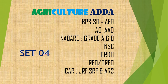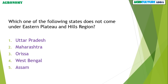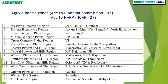First question: which one of the following states does not come under the Eastern Plateau and Hills region — Andhra Pradesh, Maharashtra, Odisha, West Bengal, or Assam? There are 15 different agro-climatic zones according to the Planning Commission, and according to NARP (National Agriculture Research Project) under ICAR, there are 127 agro-climatic zones.